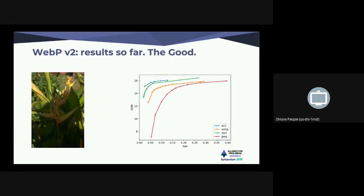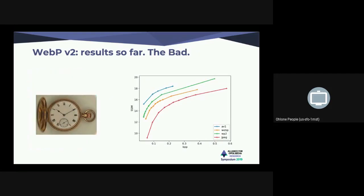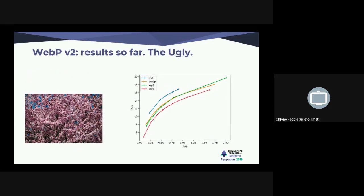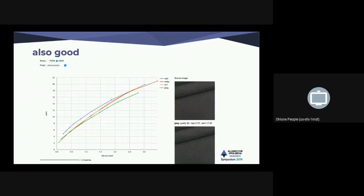Looking at results: sometimes it works — surprisingly okay for large images. WebP is the orange one, WebP V2 is the green one, and AV1/AVIF is the blue one. Sometimes we're getting close to AV1 for a fraction of the complexity; sometimes okay-ish; and sometimes it doesn't work — not better than WebP so far. But there's a lot to explore with floating partitioning. We also pay attention to web images — the atypical images found on the web, like ads. For those, WebP V2 actually performs well.